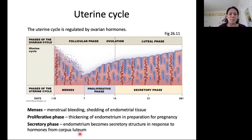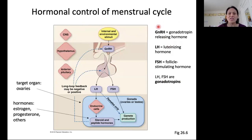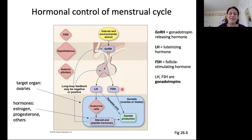Those secretions are in response to hormones from the corpus luteum. The menstrual cycle and reproduction in general is controlled by hormones from the hypothalamus and anterior pituitary. This figure shows those hormones. The hypothalamus secretes GnRH — gonadotropin releasing hormone — which stimulates the anterior pituitary to secrete two hormones: LH and FSH.